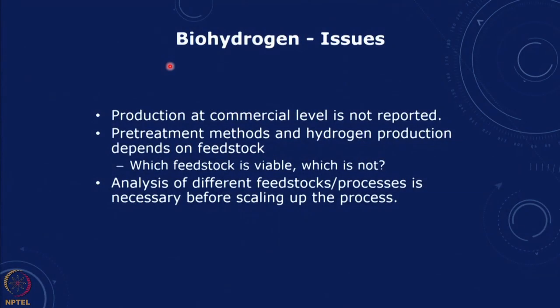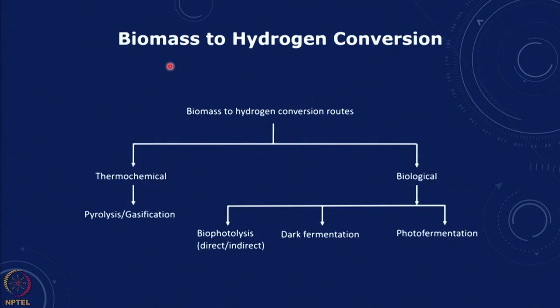We would like to calculate the NER and see if those NERs are greater than 1. Production at commercial level is not reported; pre-treatment methods and hydrogen production depends on the feedstock — which feedstock is viable, which process is viable. The analysis of different feedstocks and processes is necessary before we invest in scaling up the process. This methodology looks at biomass to hydrogen, including thermochemical methods, pyrolysis and gasification at larger scale.